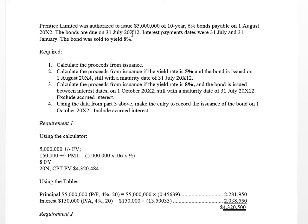The bonds are due in 10 years — that would be July 31st, X12. The bonds are paying interest semi-annually, so when we calculate our proceeds, we need to make sure that we set our N at 20, because it's a 10-year bond and there are two payments a year. N indicates the number of interest payments we're going to make on the bond. Now in our question, they gave us the yield, so we have to do a couple of different things.